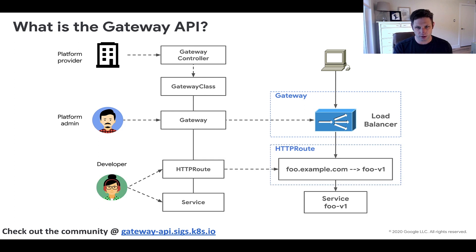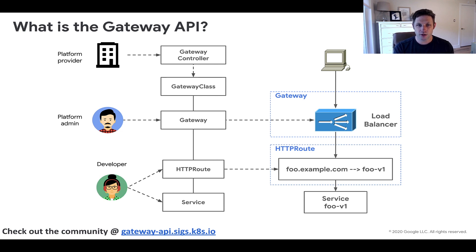Finally, you have route resources. In this case, we're talking about the HTTP route, which defines configuration applied to a Gateway. You can see that together, the Gateway and the HTTP route resources do what the ingress resource does as a single resource.